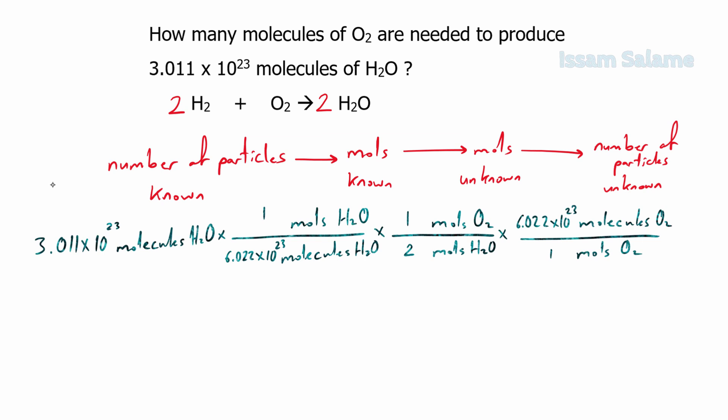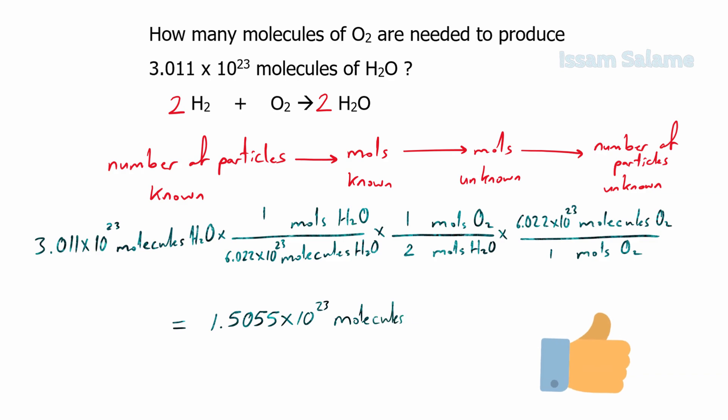We multiply all numerators together, then divide by the denominators, and we get the answer: 1.5055 × 10²³ molecules of oxygen.